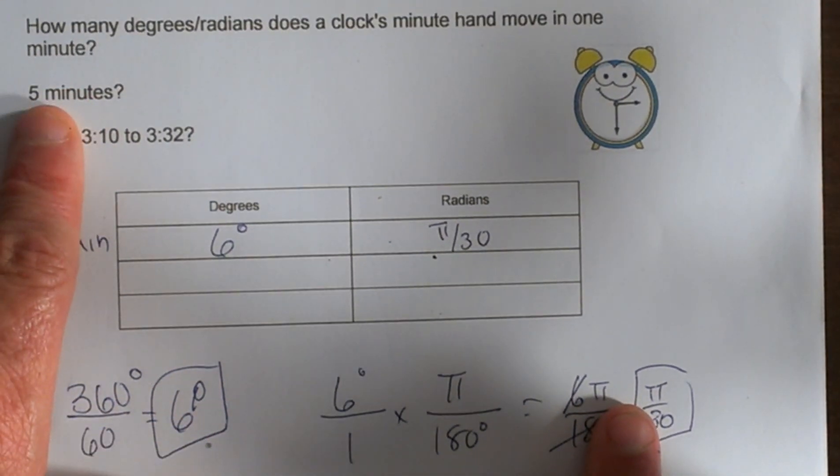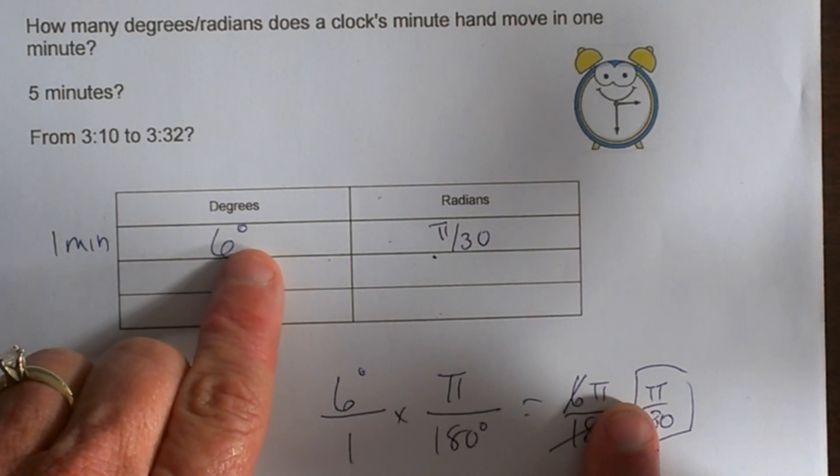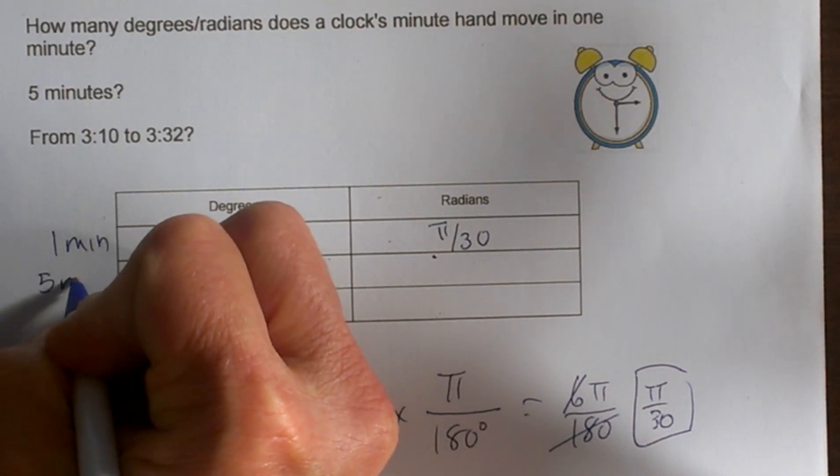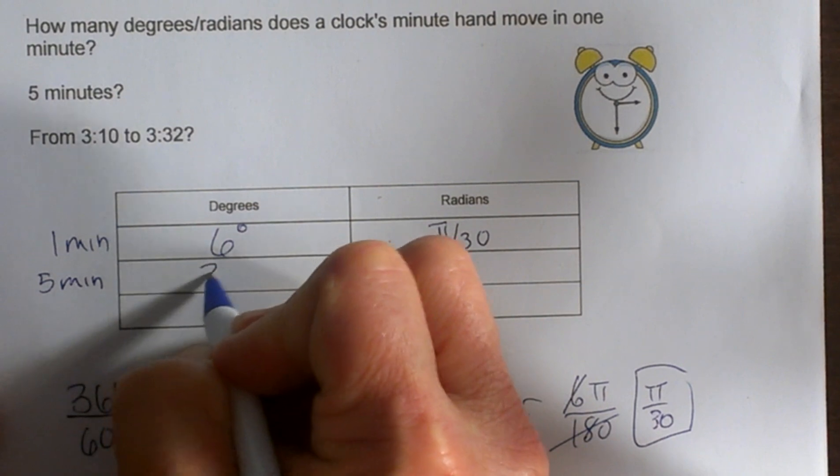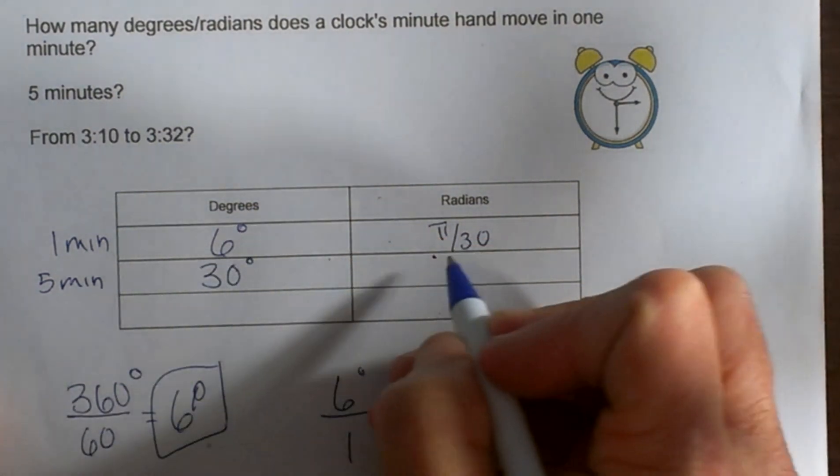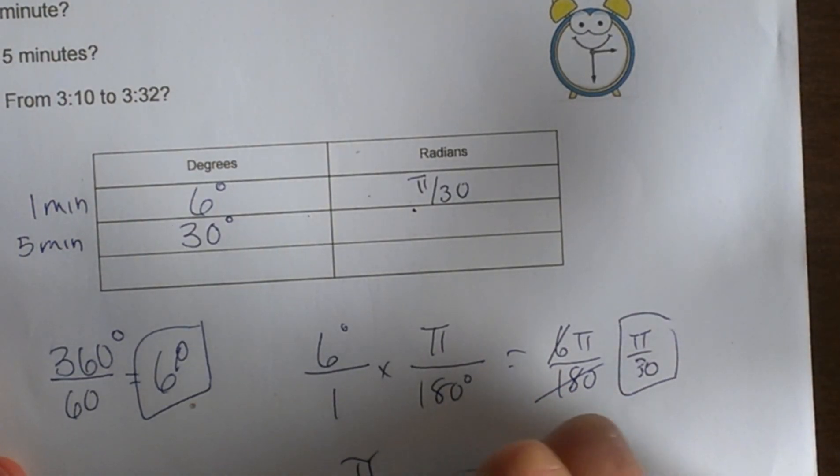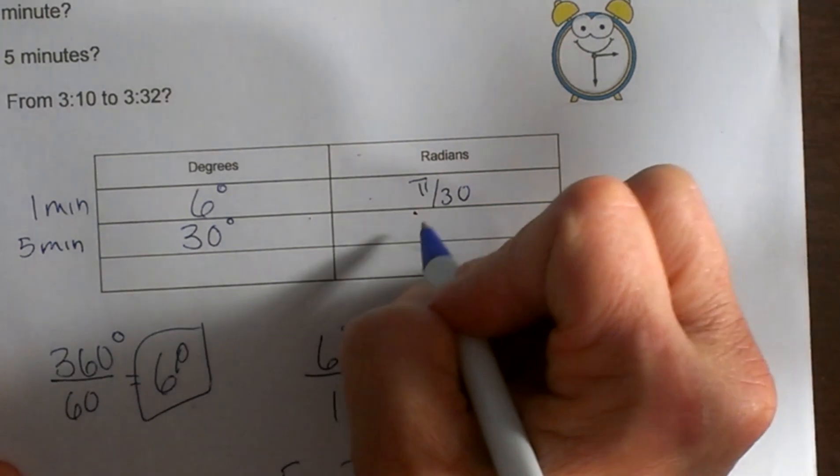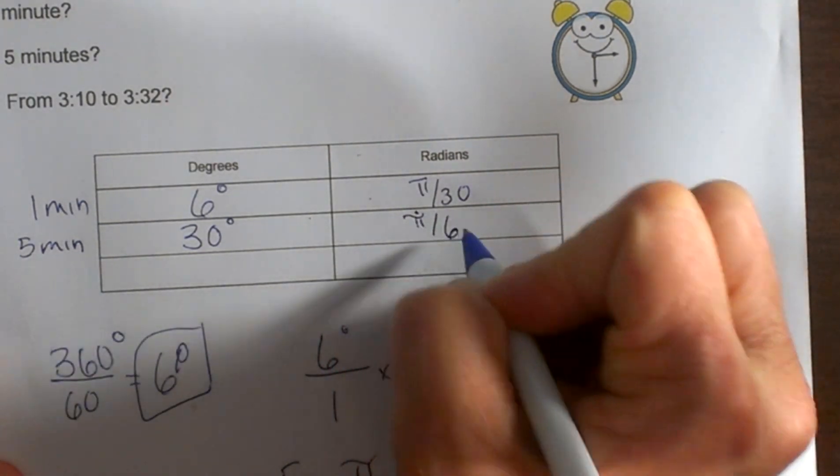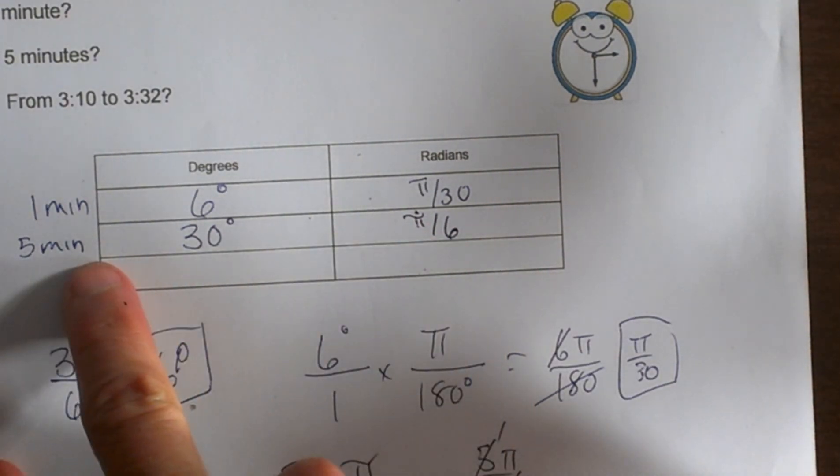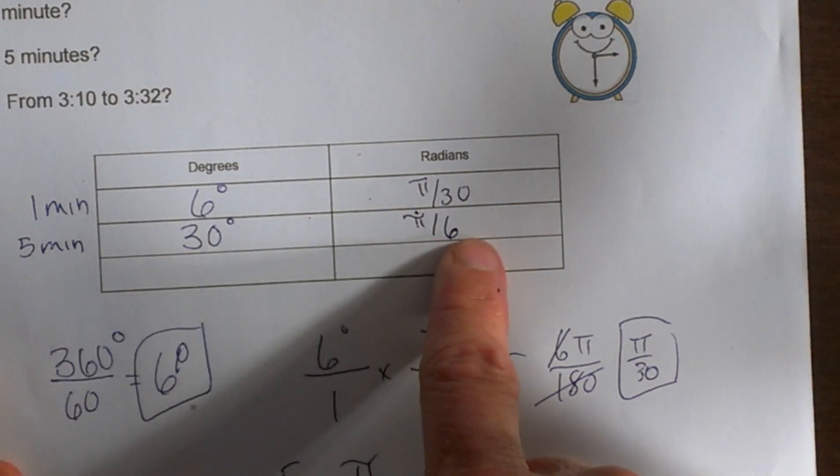How about for 5 minutes? Well, if this is for 1 minute, all we have to do is multiply by 5, so that's 30 degrees. Take π/30 times 5 for 5 minutes—that's 5π/30, which reduces by 5 to π/6 radians. So in 5 minutes the clock moves 30 degrees or π/6 radians.